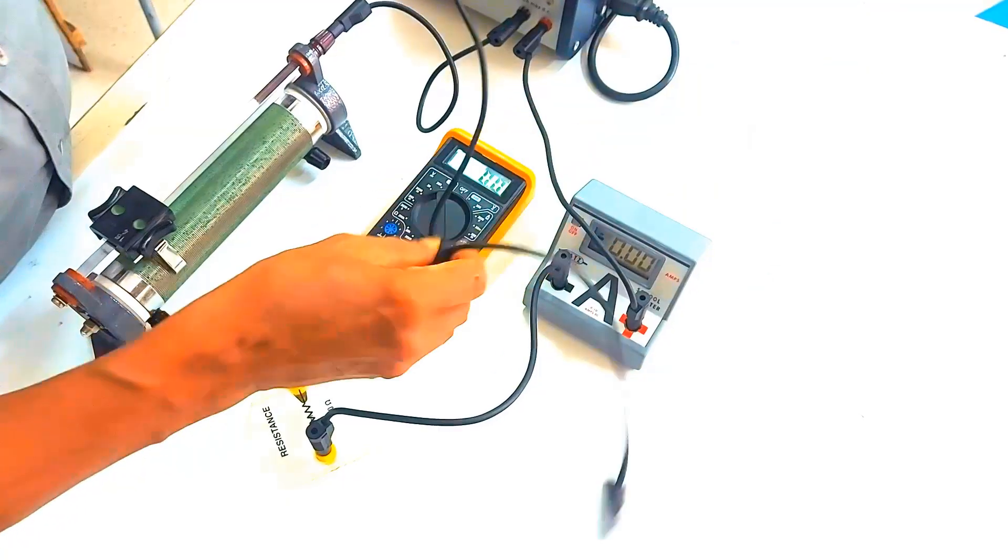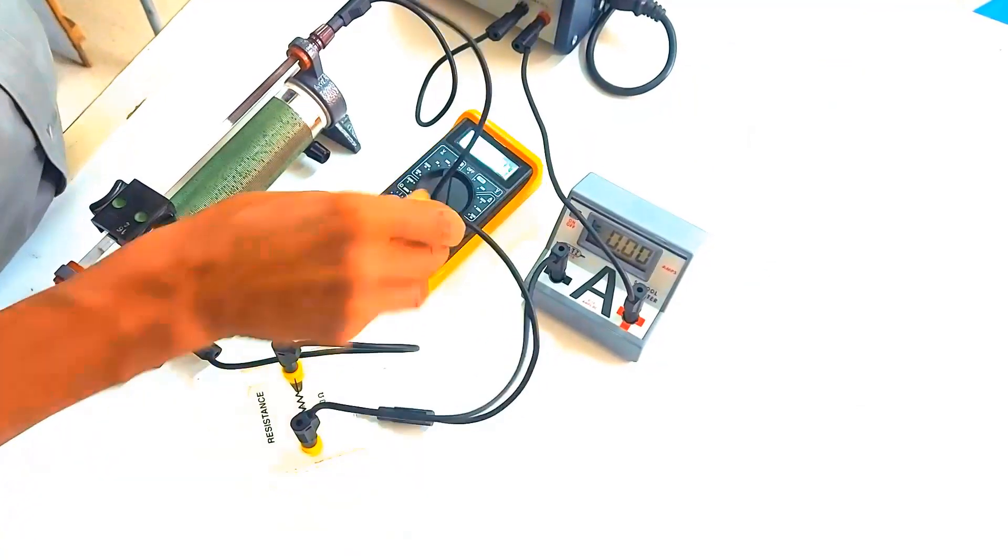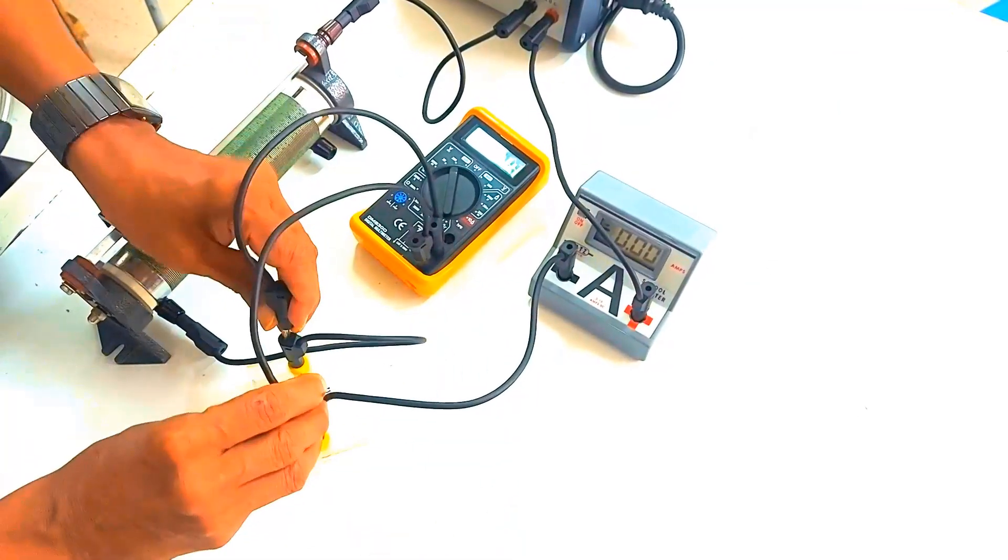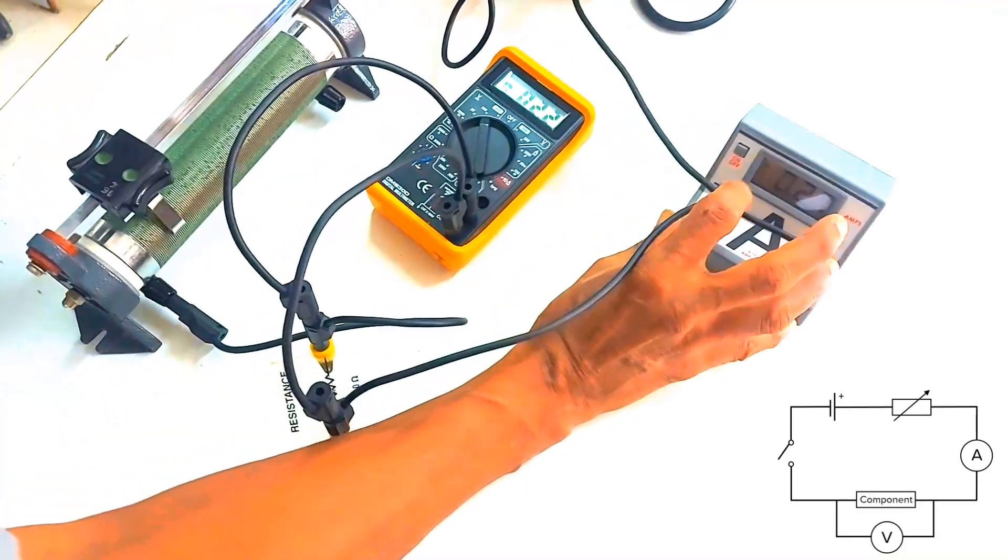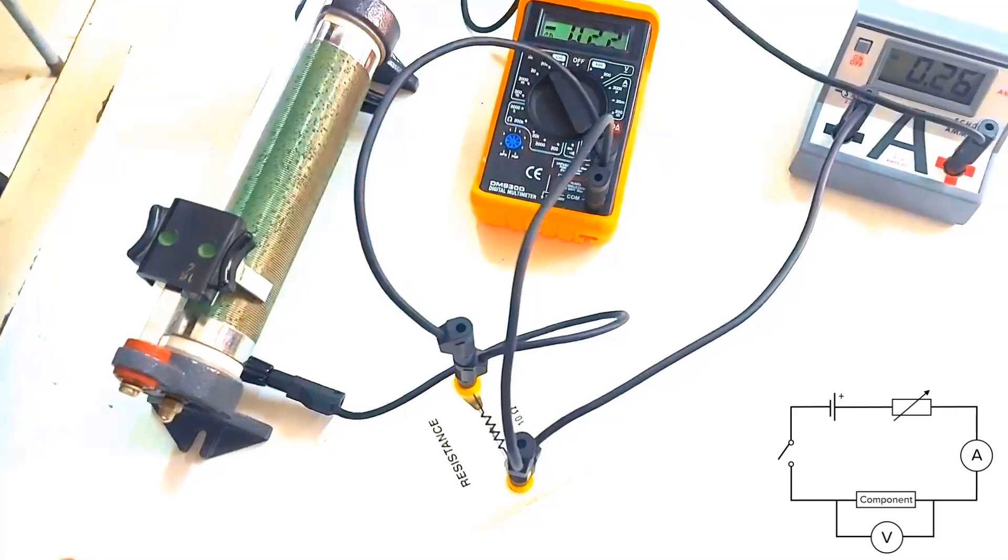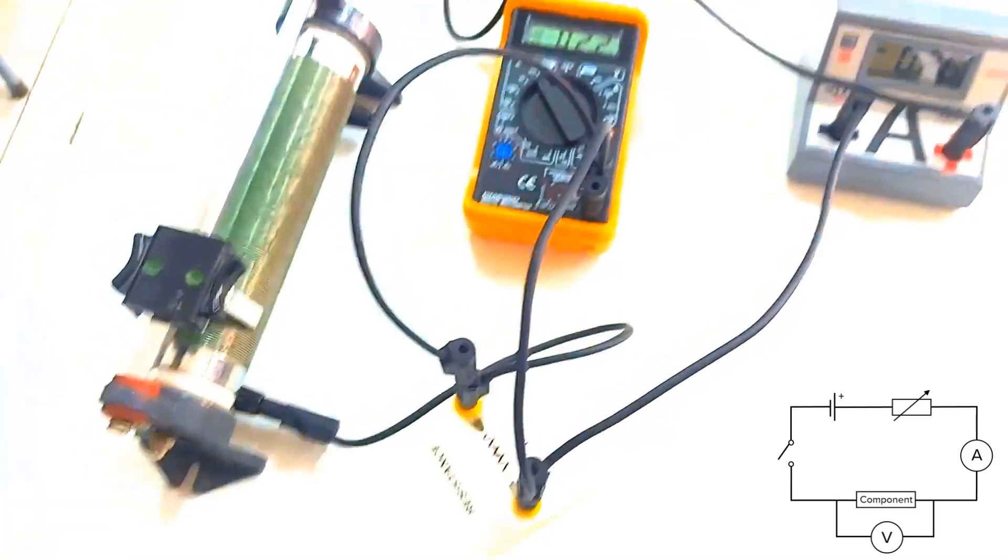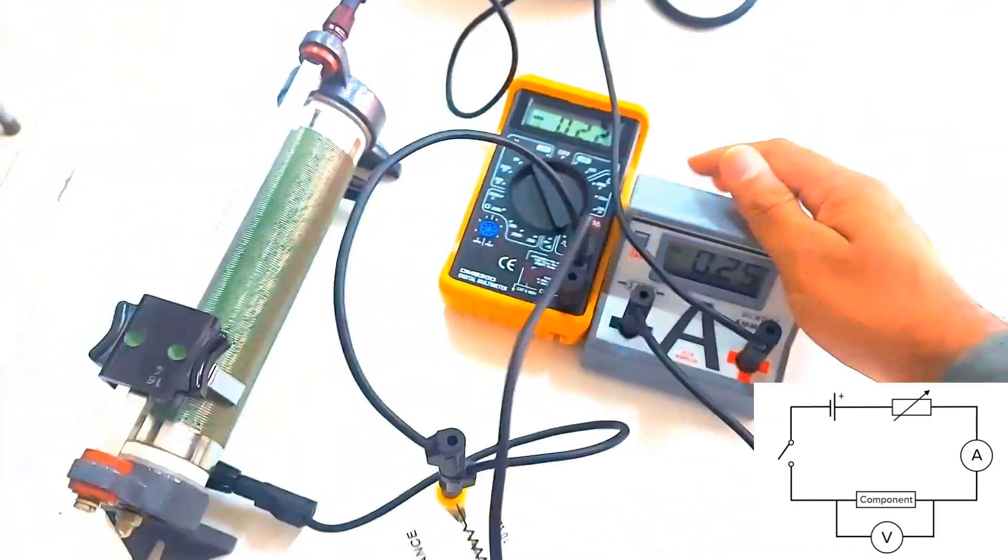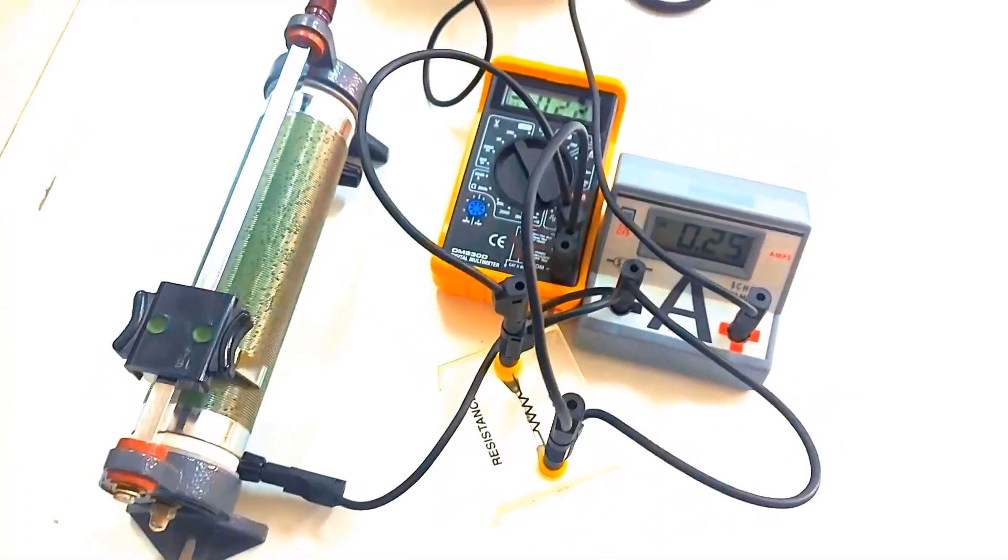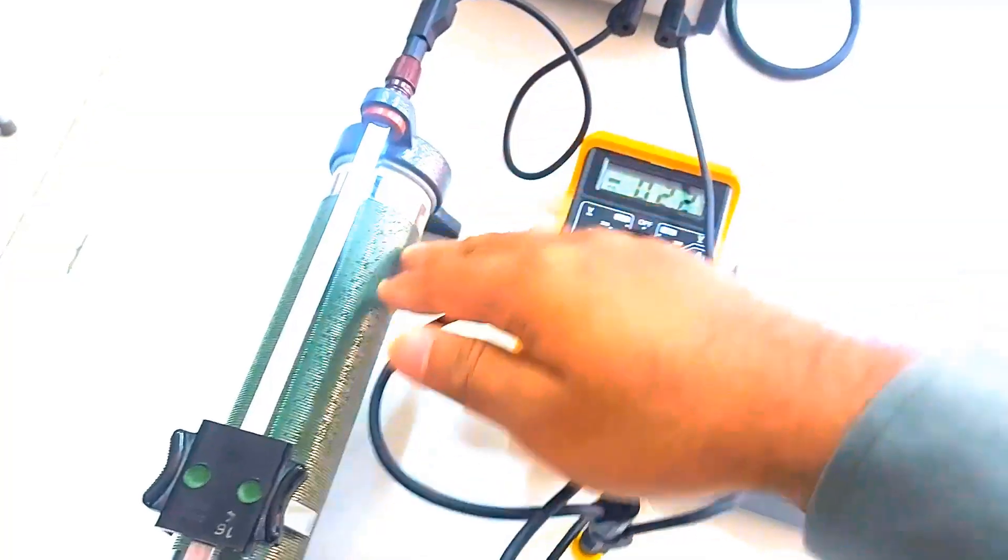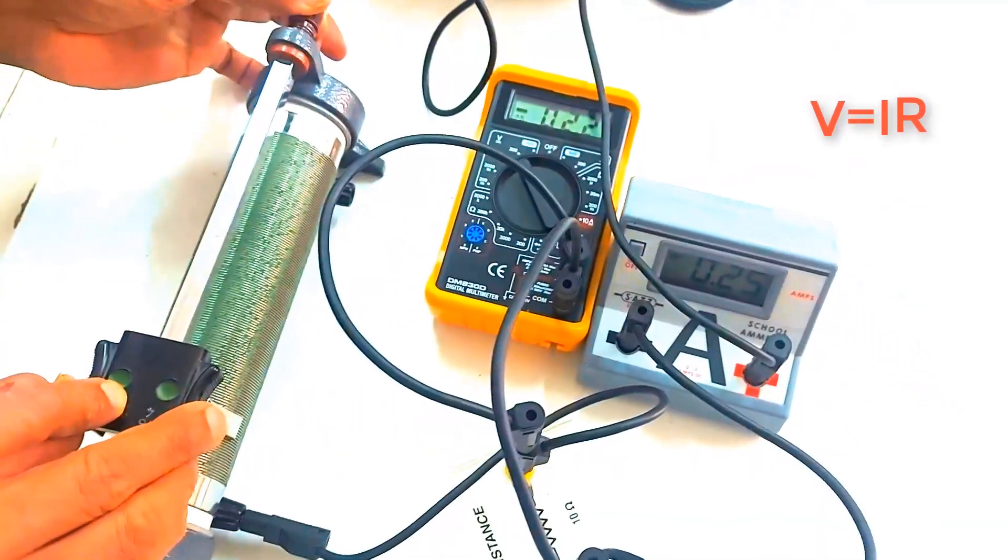Here's all wired up. The power supply connects in series with the rheostat and our fixed resistor. The ammeter sits in line to measure current and the voltmeter is across the fixed resistor for voltage readings. Our mission is to validate Ohm's law, V equals IR, in the real world.